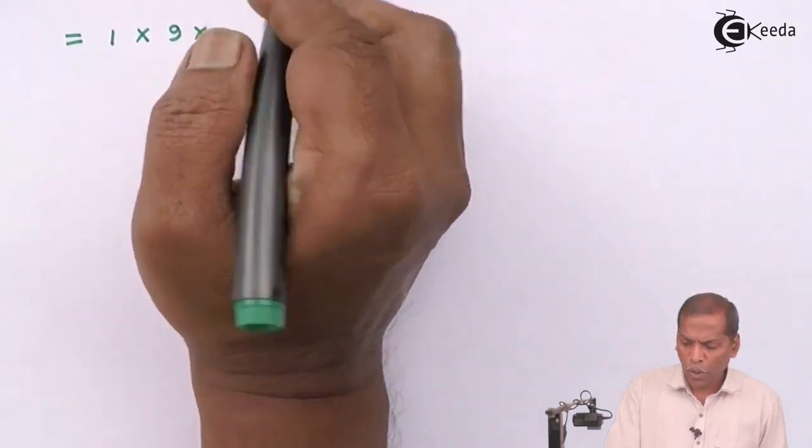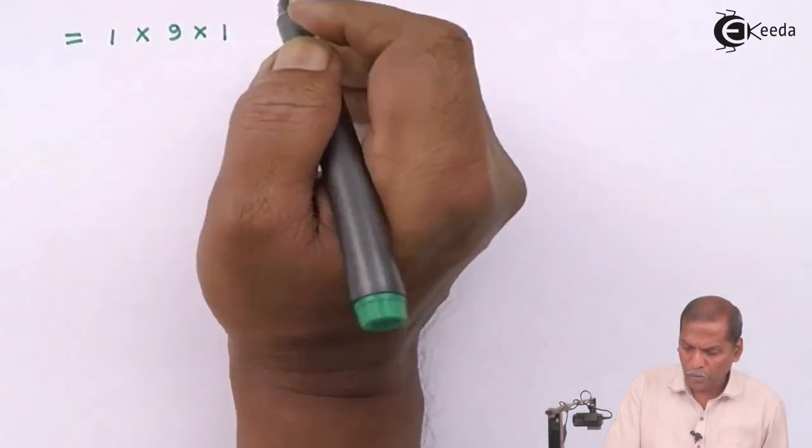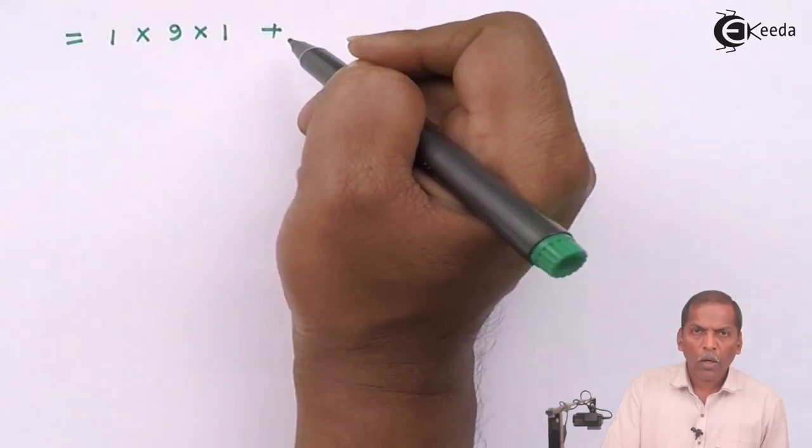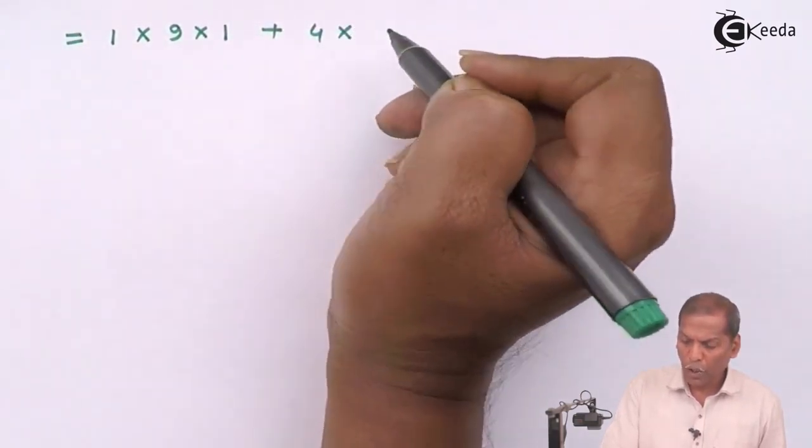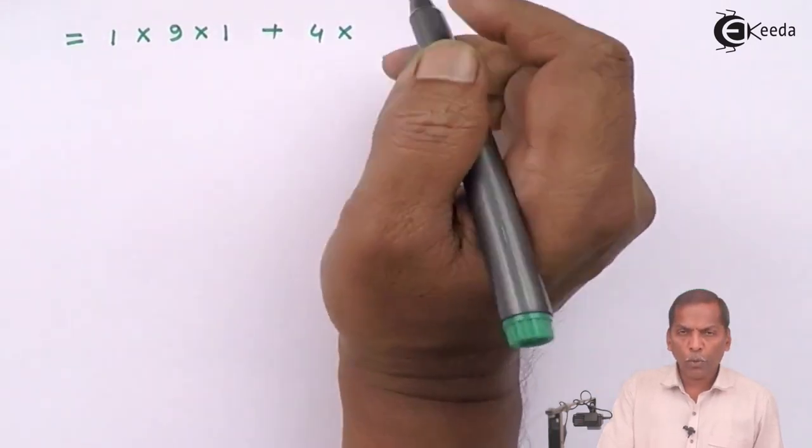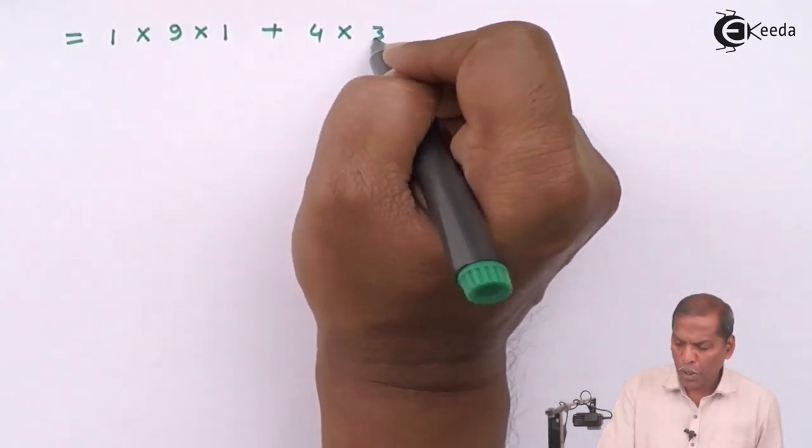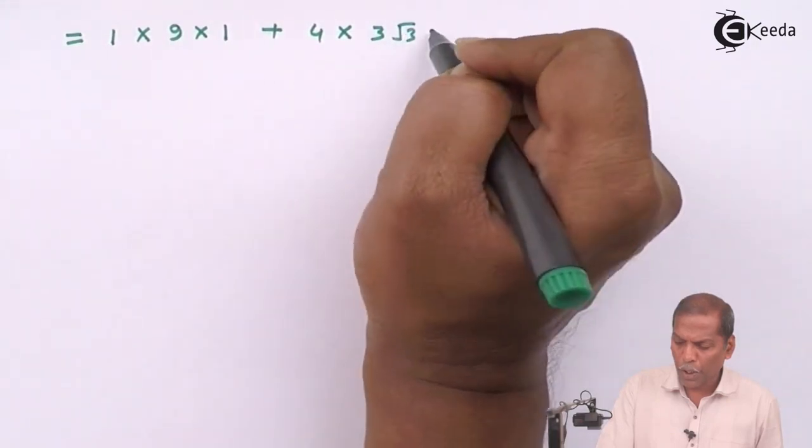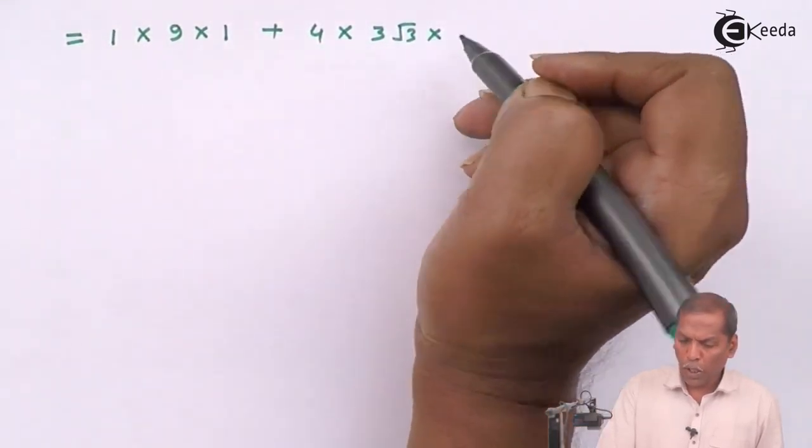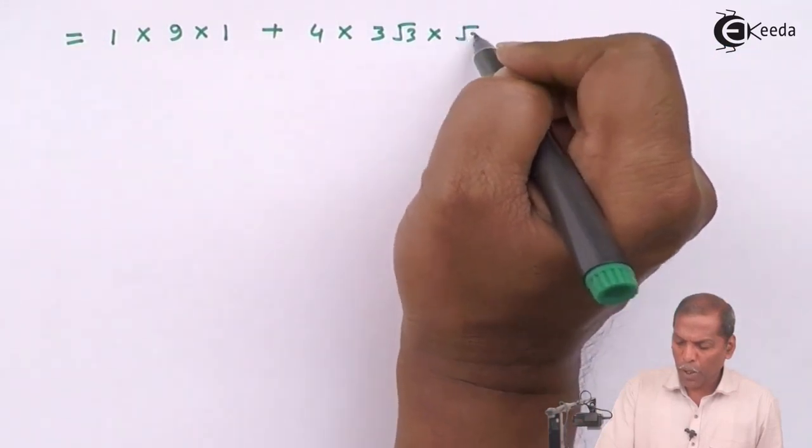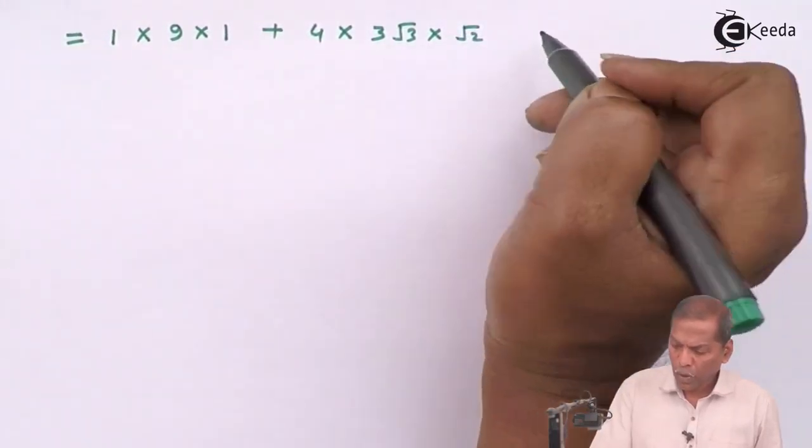Plus now 4C1 so that gives us 4 into root 3 cube that gives us root 3 into root 3 into root 3.